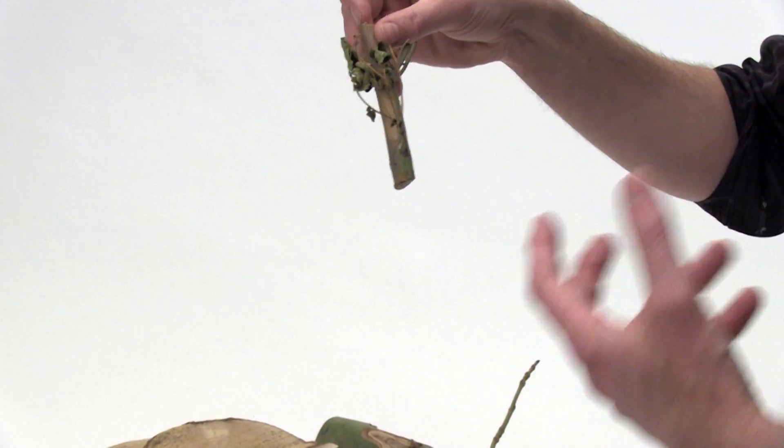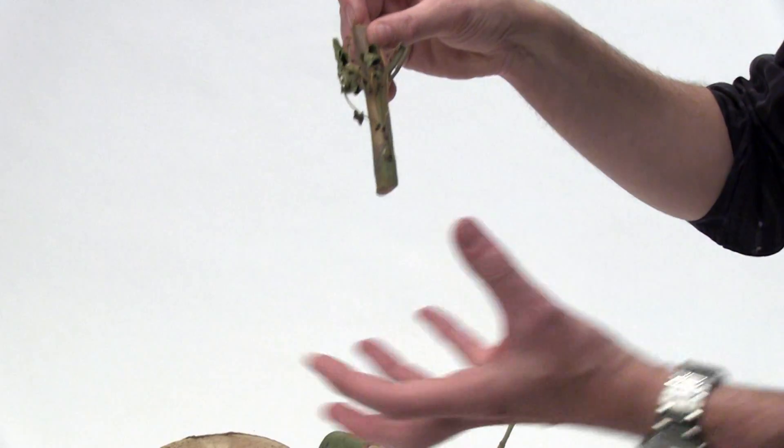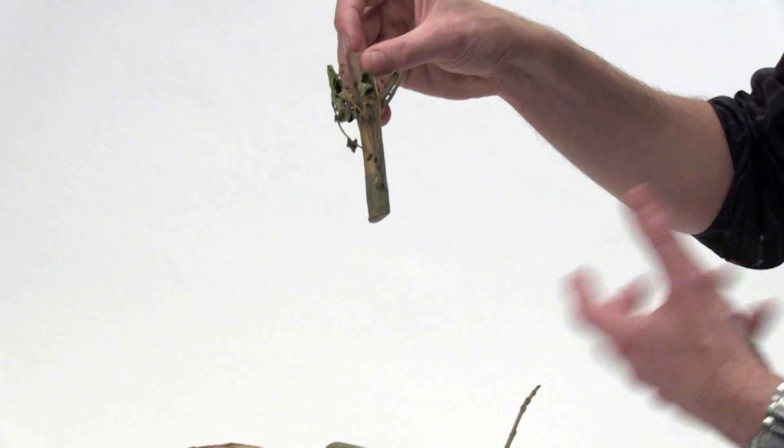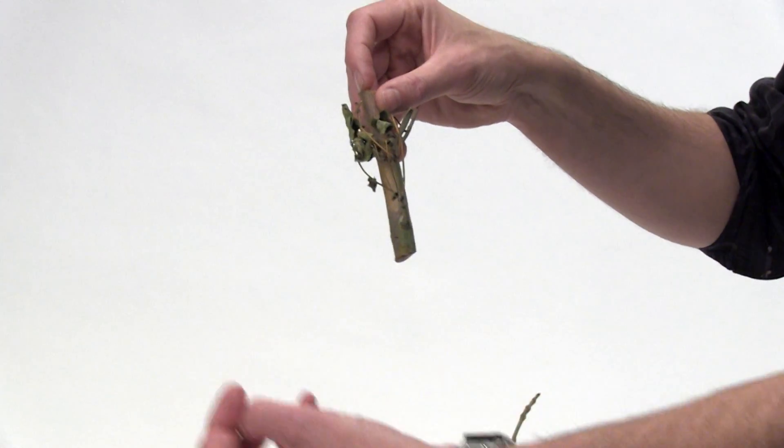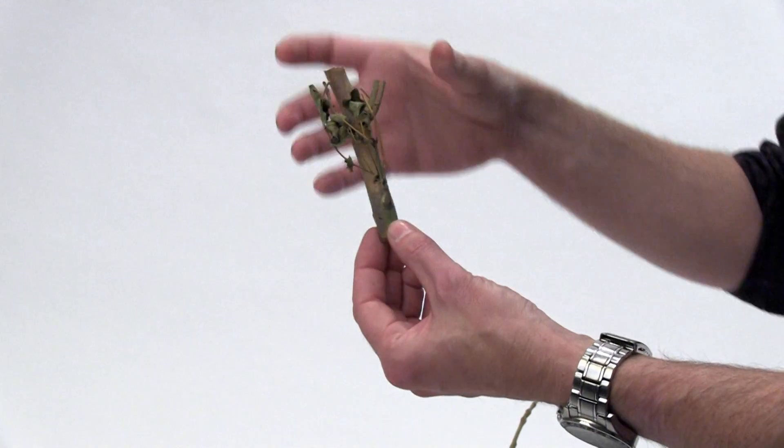Now ash trees often produce further shoots then from lower down. So the tree might look quite healthy at first and you get this sort of what they call epicormic growth shoots growing out from the base and from lower beyond the point of the actual canker.